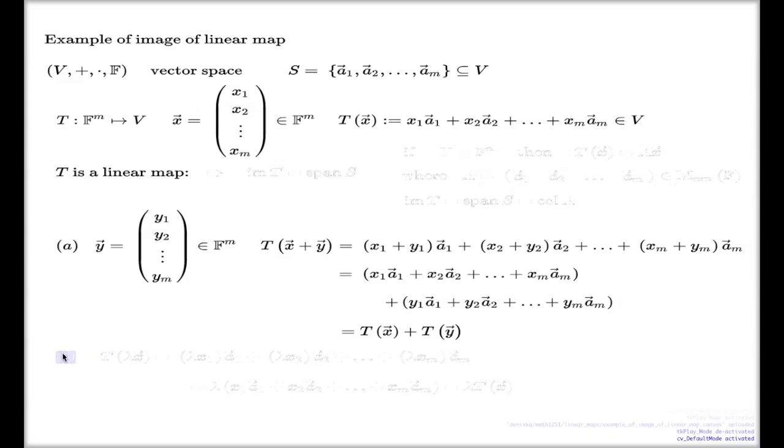Similar argument will work for the second property of a linear map. If I compute T of lambda x, we all know how we scale a vector. How we scale m tuple, I'm sorry. We scale each component here. And I will use these components here now. So if I use the definition of T, that's how it will be. lambda x1 a1, lambda x2 a2, lambda xm am. I use the components of this vector, which are lambda x1, lambda x2, lambda xm. And I use them here in the definition of T.